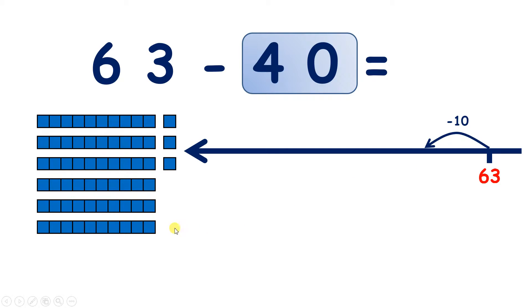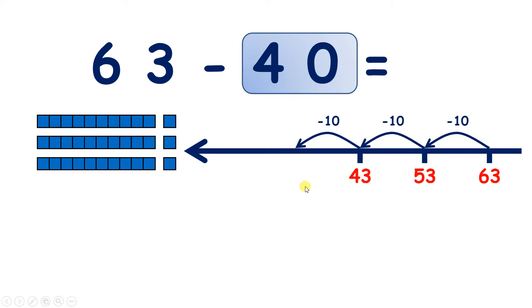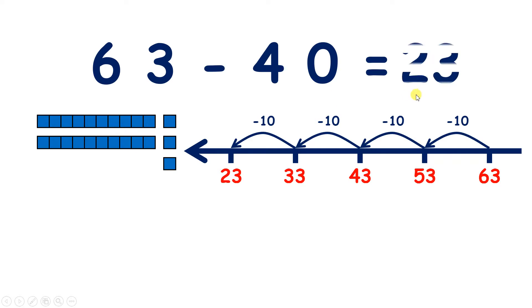So take away 10 and that leaves us with 53. Take away another 10 and we have 43. Take away our third 10 and we have 33. And one more 10 means we will have taken away 4 tens. And that leaves us with 23. So we've subtracted 40 because we've taken away 4 tens, or we've taken away 10 four times. So 63 minus 40 is 23.